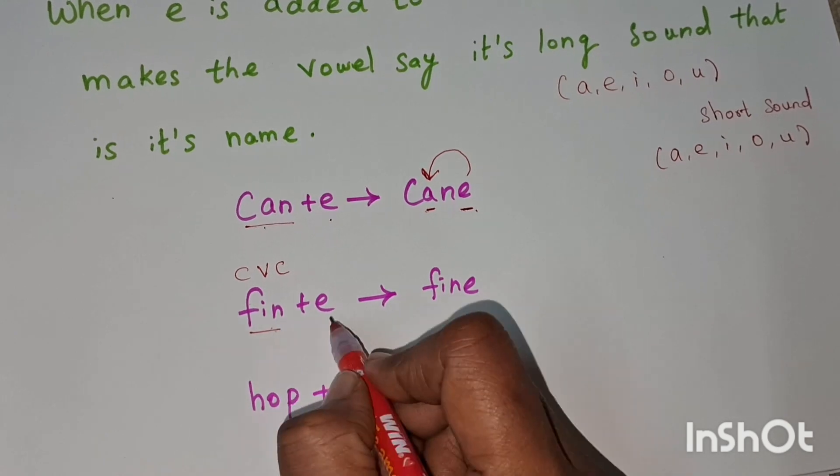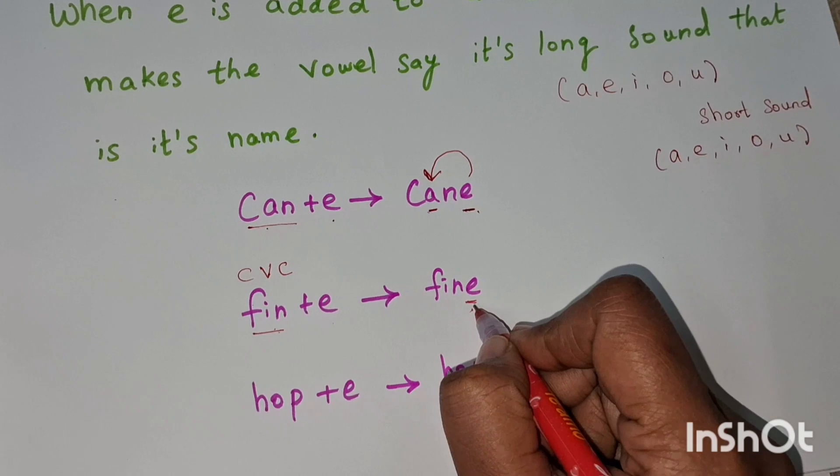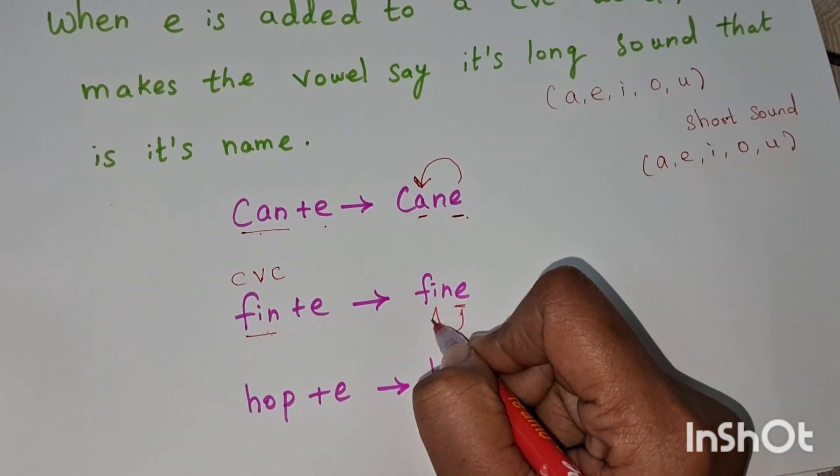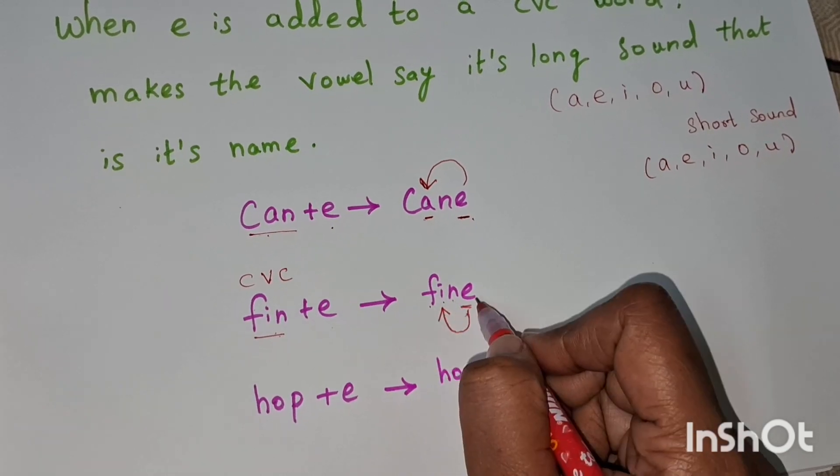When you add e to fin, it becomes fine because of the magic e. The magic e makes the e silent, and the vowel in the word says its name. F-I-N becomes fine.